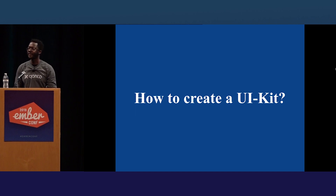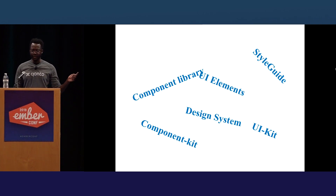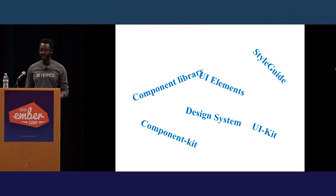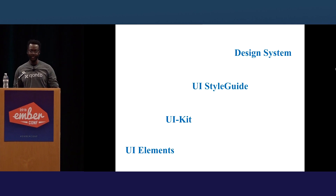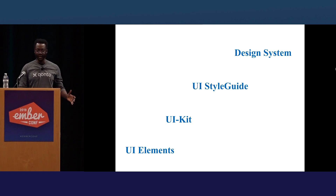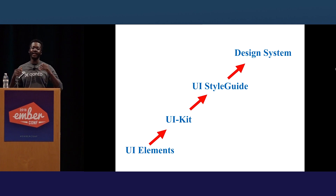So how to create a UI kit? Wait, a UI kit? But I talked about a style guide before. Or is it a component library, UI elements, a design system? This is very confusing. So until the end of the talk, I'm going to use four concepts: UI elements, which are just components in your app; a UI kit; style guide; and a design system. I will explain them as I go along, and I see them as a continuum, as a spectrum.